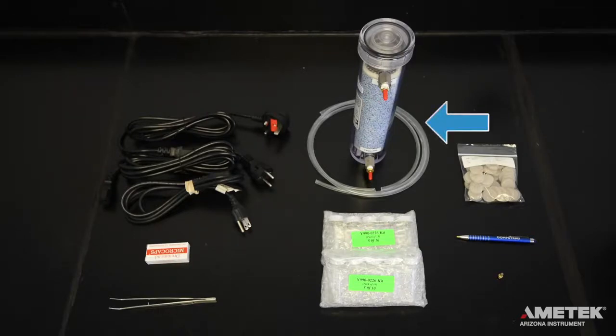3 feet of 1 1⁄8 inch by 1 1⁄4 inch clear tubing, one box of one microliter microcaps, one set of tweezers, one inline desiccator kit.